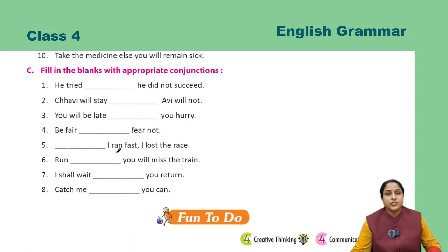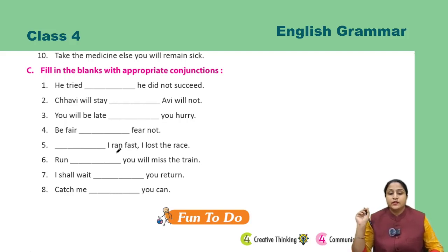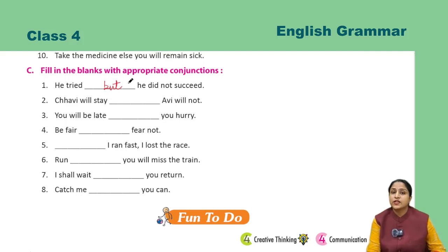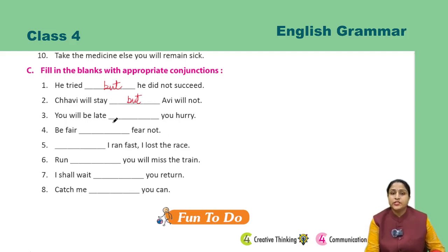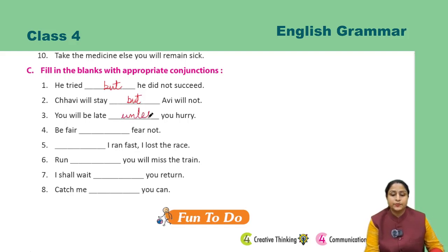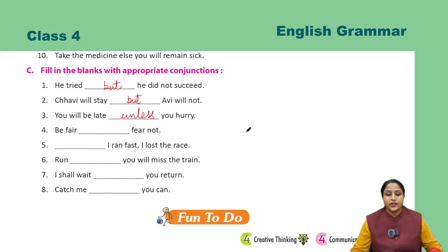Fill in the blanks with the appropriate conjunctions. Ismein conjunctions fill karna hai. First: He tried, dash, he did not succeed — answer: He tried but he did not succeed — usne koshish ki lekin he did not succeed. Second: Chavi will stay, blank, Avi will not — answer: Chavi will stay but Avi will not. Third: You will be late, unless you hurry — jab tak tum jaldi nahi karoge. Ishi tarah se iske baaki ke parts aap khud karenge.